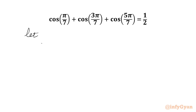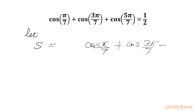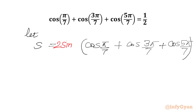I will consider the sum S = cos(π/7) + cos(3π/7) + cos(5π/7). Now we are going to multiply both sides by 2sin(π/7). So we will write 2sin(π/7) on the left hand side, and also multiply the right hand side by 2sin(π/7).